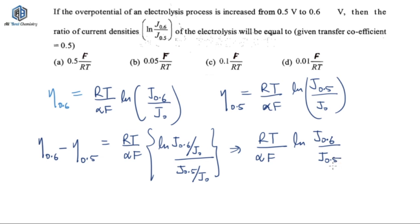So now you just have to solve this. This is what you will get as the value. Now they have asked the value of this thing only. So what about the other part? Just take to the other side and just multiply that. So your ln J0.6 divided by J0.5 that will be equal to eta 0.6 minus eta 0.5 into alpha F by RT. So that is what you will get. Now just put the values to get the answer.